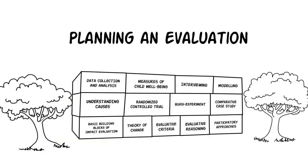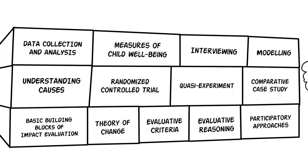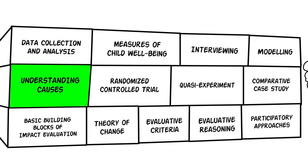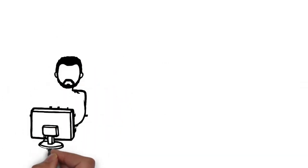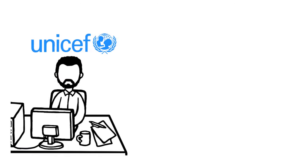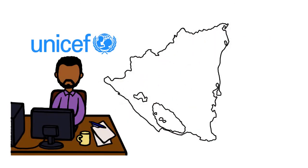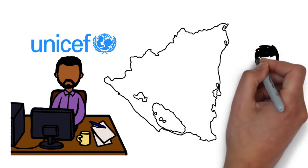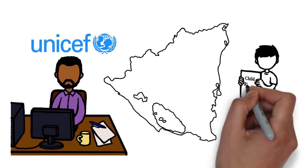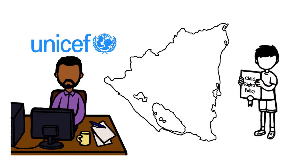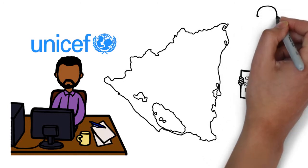This video covers causal attribution in impact evaluations. This is Carlos. He's a social policy specialist at UNICEF Nicaragua. He is planning an impact evaluation of a child rights policy to understand its effects and whether it has contributed to better child well-being in Nicaraguan communities.